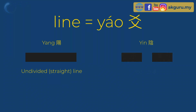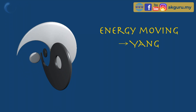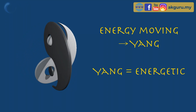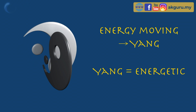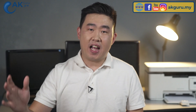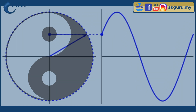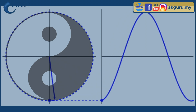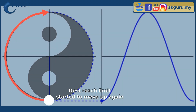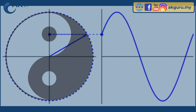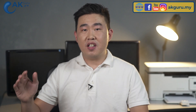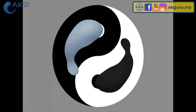Yang is drawn as a straight line or undivided line. Lines are also called Yao in Mandarin. Yin is drawn as a divided line, which looks like a dash line. When the Supreme Ultimate is in movement, it generates Yang — so Yang means energy is moving, and Yang is classified as something energetic. When the movement reaches its ultimate limit, it needs to rest, and rest generates Yin.